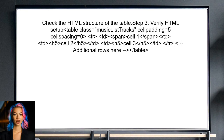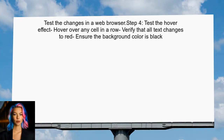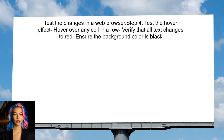Let's check the HTML structure. The user should ensure that the table rows are correctly set up with the necessary elements. Each row should contain the cells that will change color on hover. Finally, the user should test the changes in a web browser. When hovering over any cell in a row, all texts should now change to red, while the background turns black.